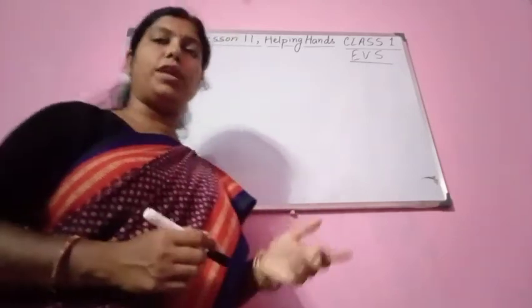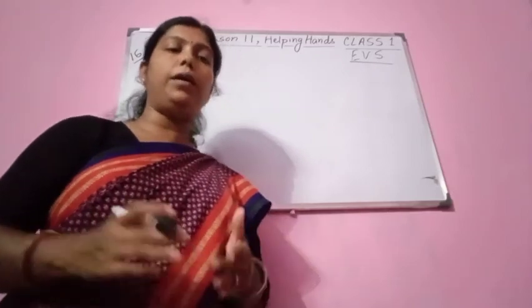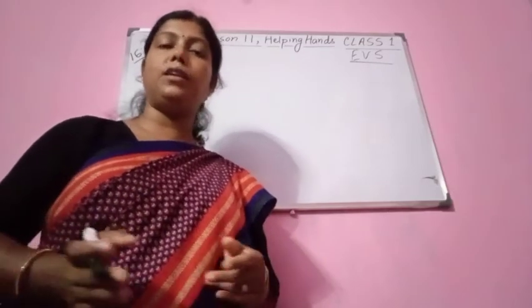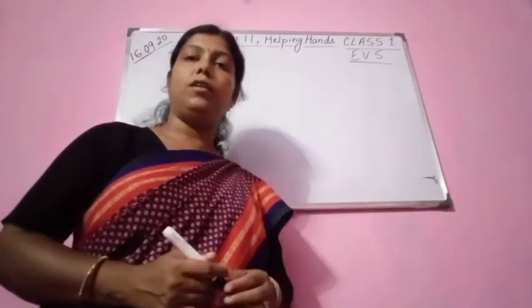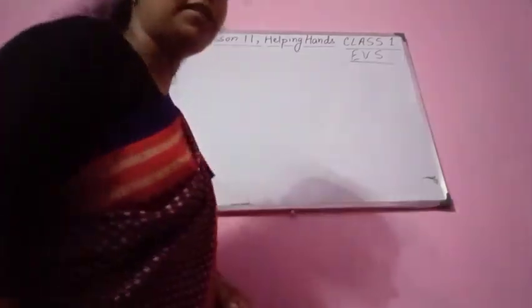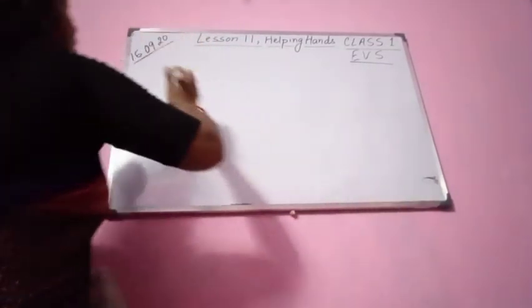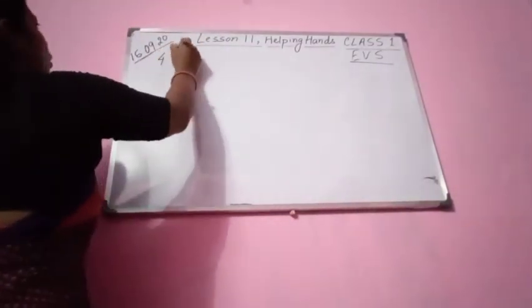So today we are going to write about farmer, policeman, and tailor. Let us write down number four — let us write down about a farmer.